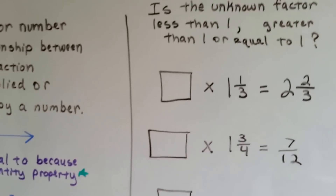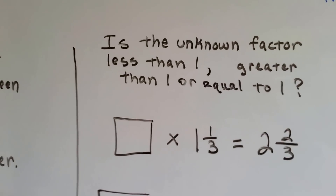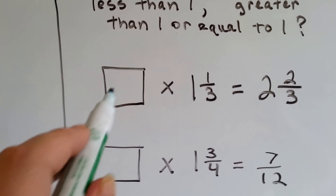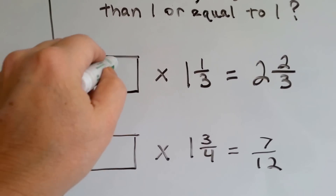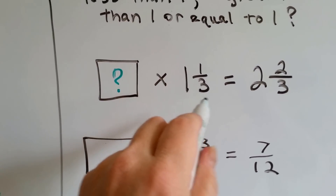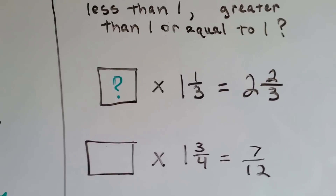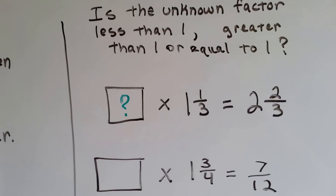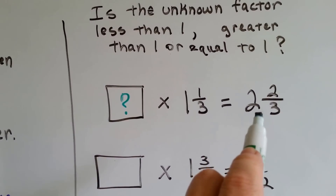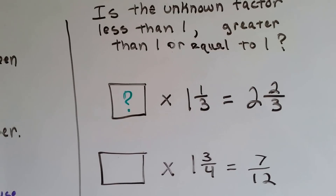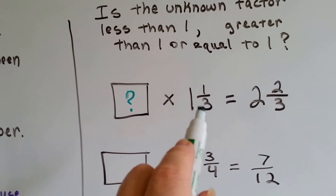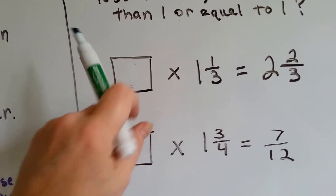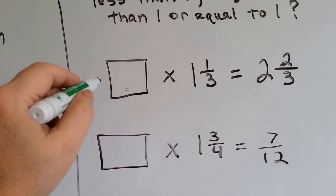So, is the unknown factor less than 1, greater than 1, or equal to 1? Some unknown factor times 1 and 1 third is 2 and 2 thirds. Do you think it's bigger than 1, smaller than 1, or 1? If our product is 2 and 2 thirds, it's bigger than 1 and 1 third, so the unknown factor must be bigger than 1 — greater than.